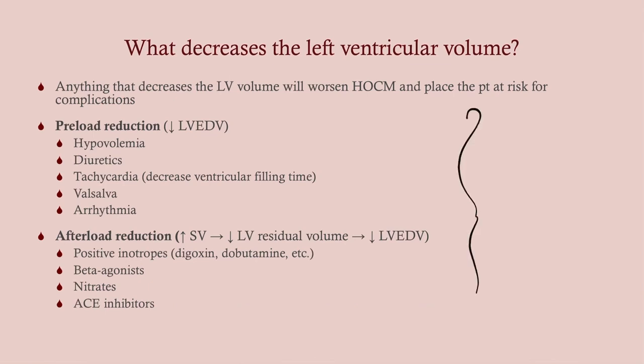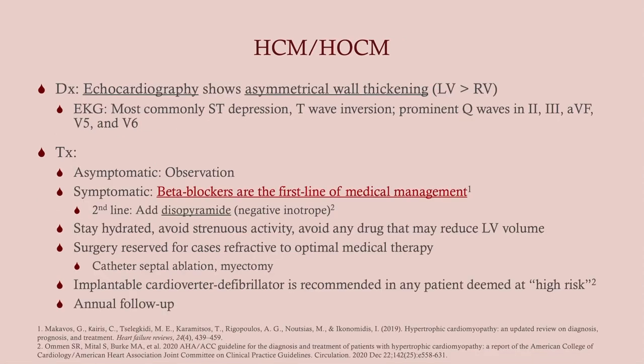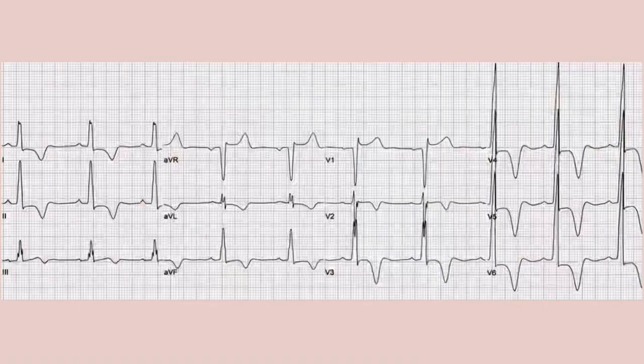Things that reduce left ventricular volume should be avoided in patients with HOCM. Diagnosis is by echo — look for asymmetrical wall thickening, always worse in the left ventricle than the right. EKG findings are non-specific, with changes especially in the posterior and lateral leads: II, III, aVF, V5, and V6. Asymptomatic patients are observed; symptomatic patients are started on beta blockers as first line, because slowing the heart allows more diastolic filling, increasing preload and keeping the outflow tract open. Surgical options exist after maximal medical therapy.